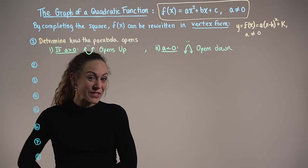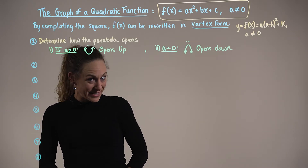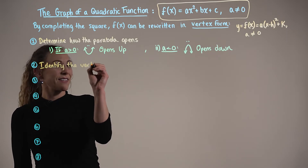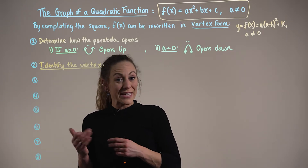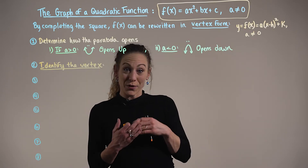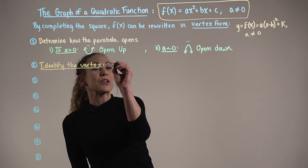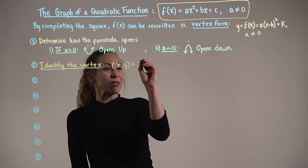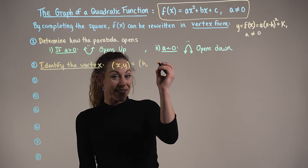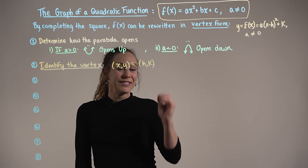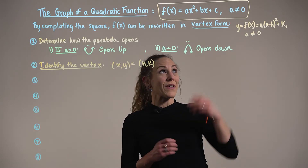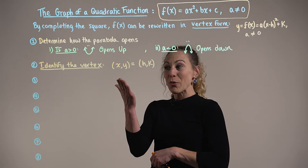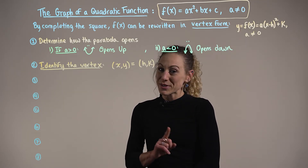Step two is identifying the vertex. If we're using the vertex form of the parabola, we know the vertex has coordinates where x = h and y = k. The standard form of a quadratic will have a slightly different version of the vertex components, which we'll see shortly.